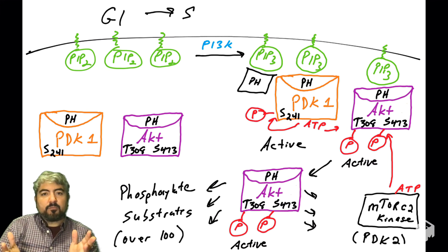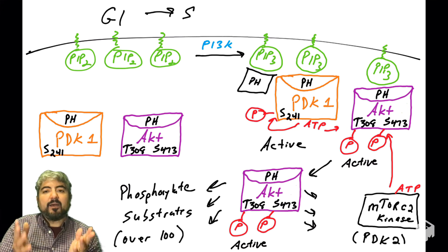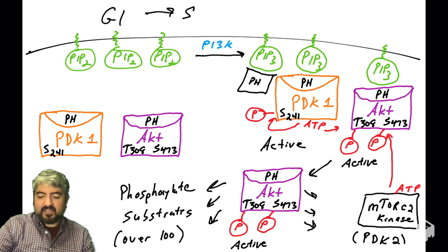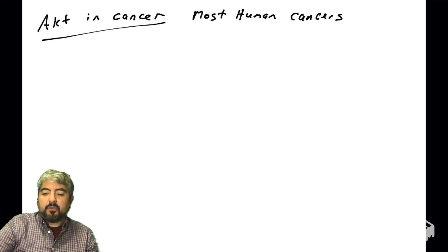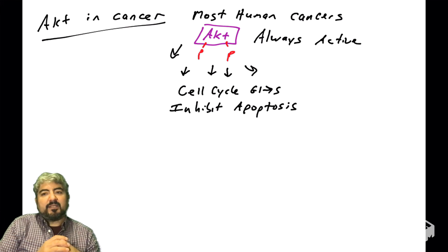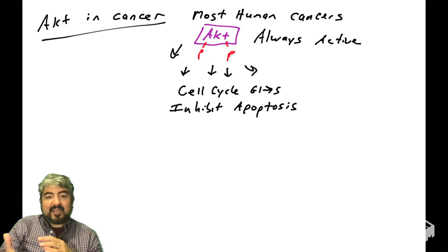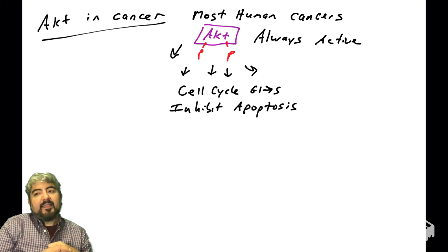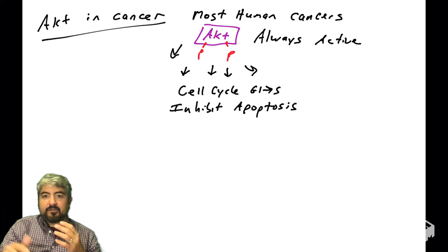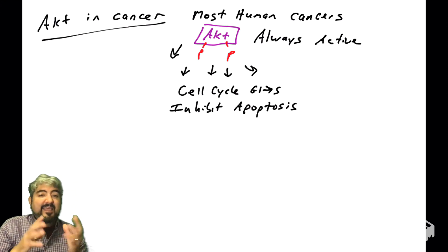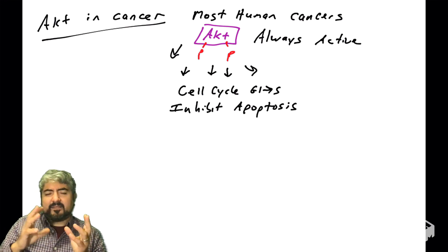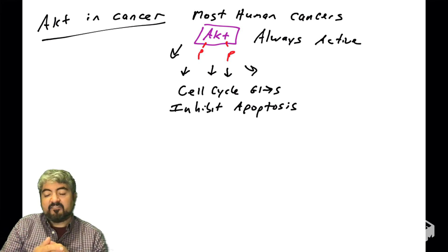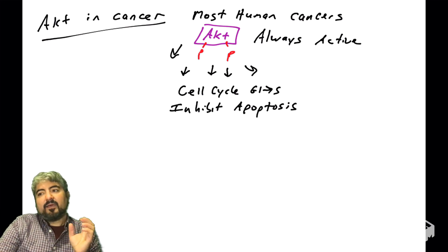AKT is a very important protein that regulates so many proteins within the cell. We'll cover those pathways in other videos. Before we leave this video, we'll talk about AKT's role in human cancers. In many human cancers, the AKT protein is phosphorylated and active — it's phosphorylating substrates that regulate the cell cycle and apoptosis, allowing cancer cells to continually grow and divide while preventing apoptosis. The AKT pathway keeps them alive even though they are genetic freaks that really should be dying.